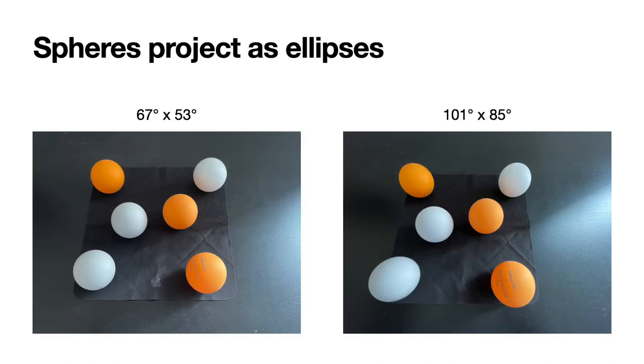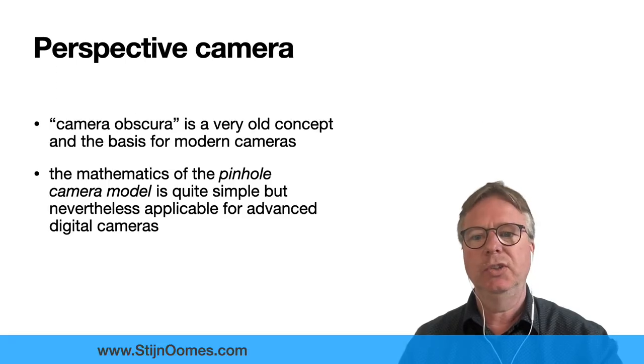Here's proof with my iPhone 12. On the left, standard camera; on the right, wide-angle camera. You see that the table tennis balls look like eggs, the ones on the outer edges.